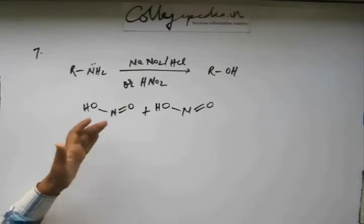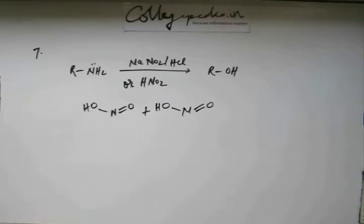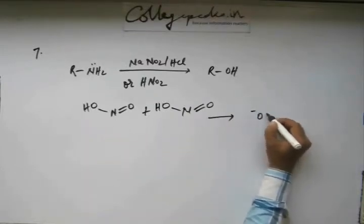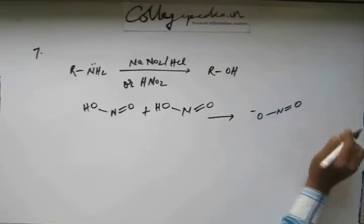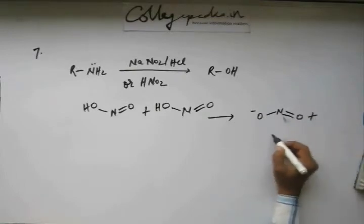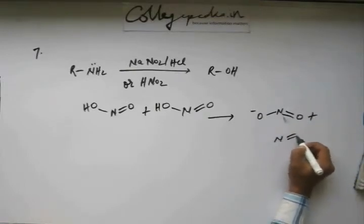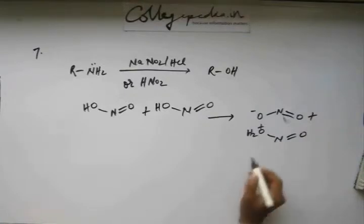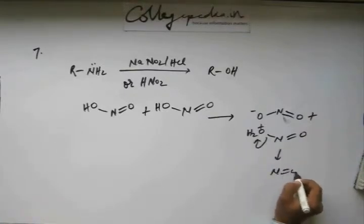Now here also since there are only acid molecules, one acid molecule is going to protonate another acid molecule. So what you are going to come out here, suppose this one protonates, so this comes in anionic form and the other one is going to be protonated like this. This water is going to come out and you are going to get nitrosonium ion.